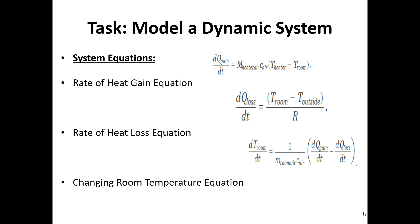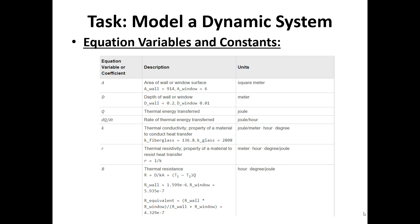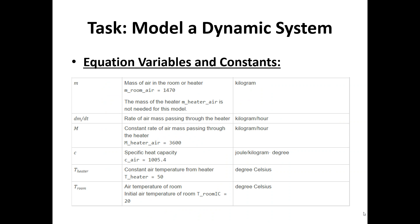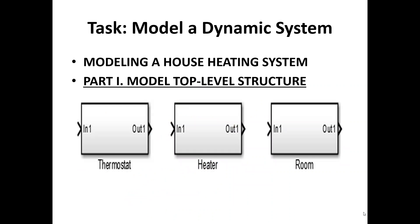Another consideration in modeling a dynamic system is the system equations. No need to memorize the equations on the screen; we just have to simulate this example as we go along. These are the equations needed: the temperature control equation, the rate of heat gain equation, the rate of heat loss equation, and the changing room temperature equation. The equation variables and constants define the coefficients, descriptions, and units of measurement for the different equations and variables we'll use.